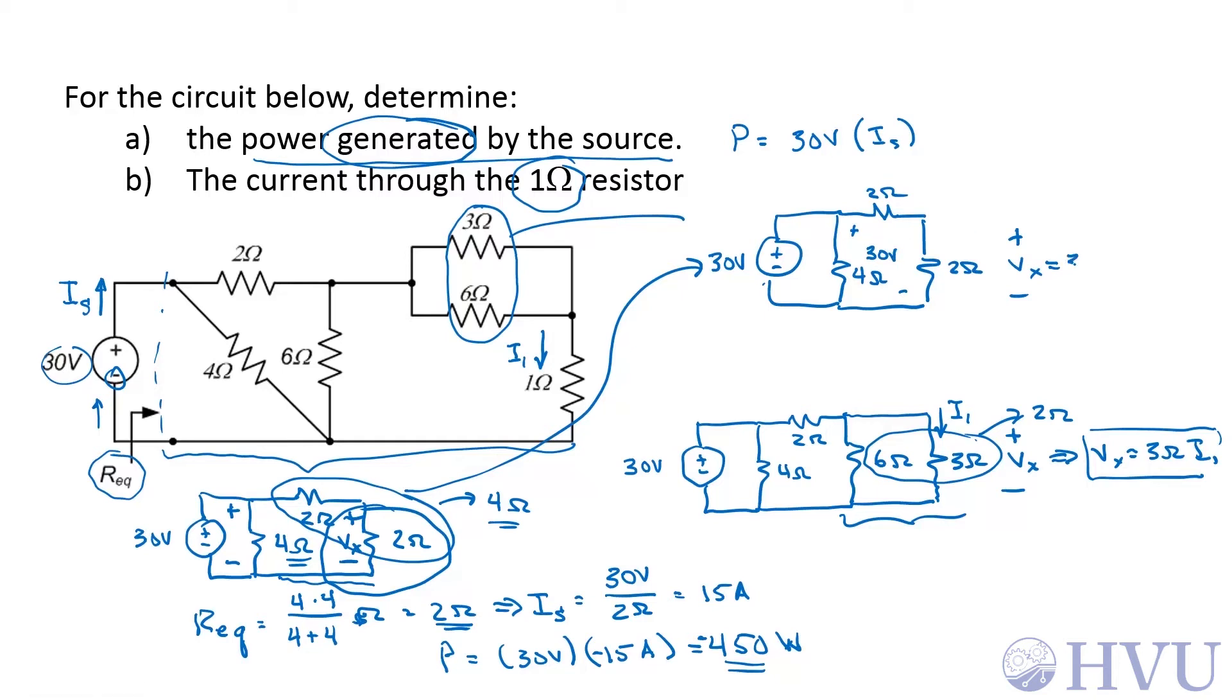So V sub X equals 30 volts times 2 ohms over 2 ohms plus 2 ohms, my voltage divider formula.